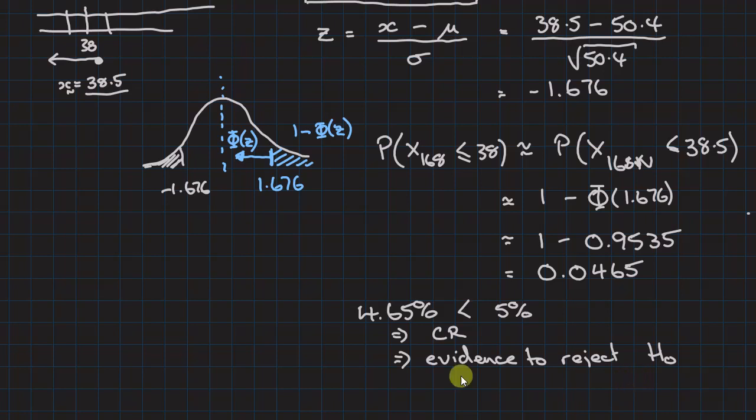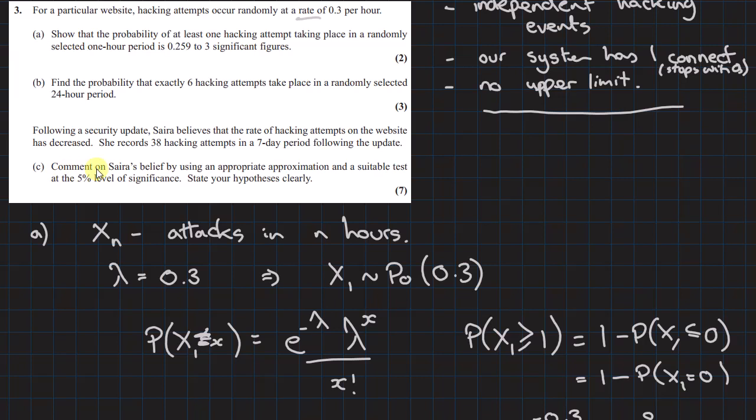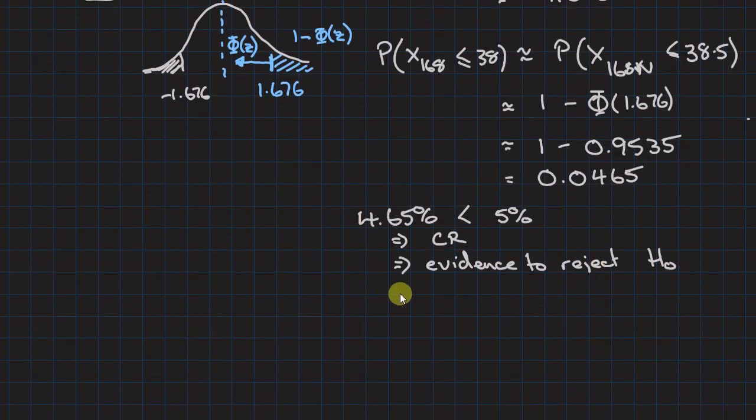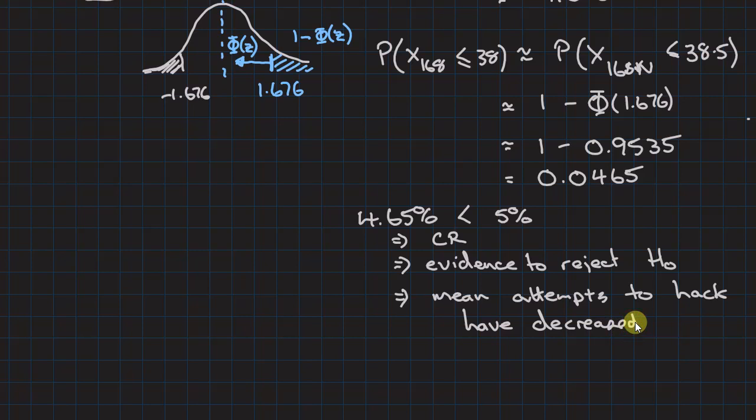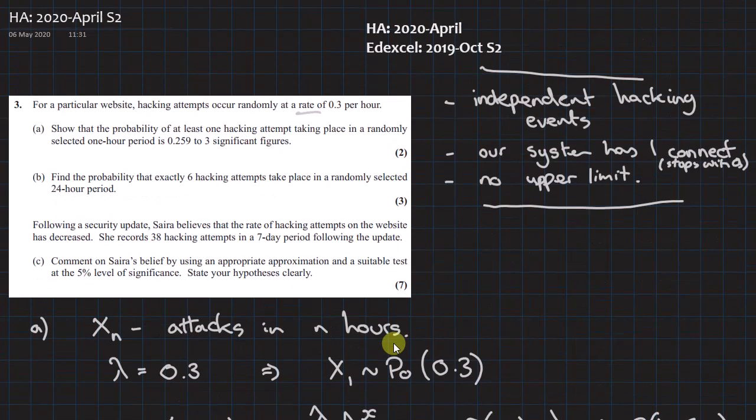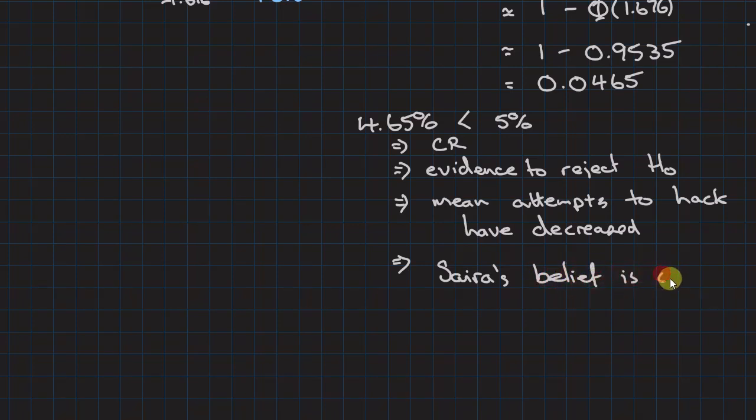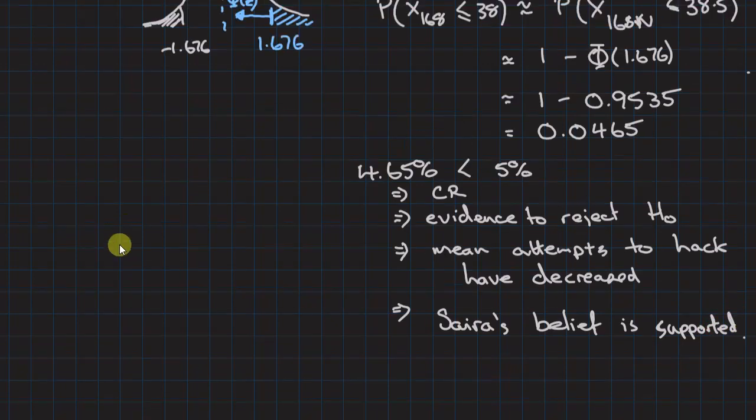And this is the mark some people lost, because it says in here, comment. It didn't say describe, it says comment. We need to put it back into context. And the alternative hypothesis here was it has decreased. So the mean attempts to hack have decreased, which also tells us that Sarah's belief is supported, not correct, supported.